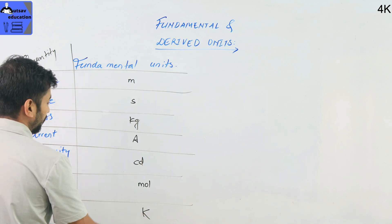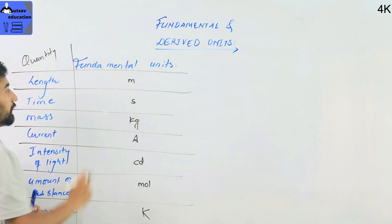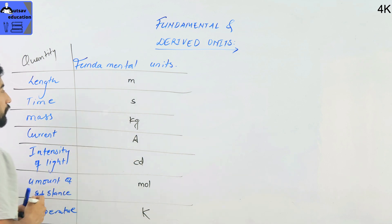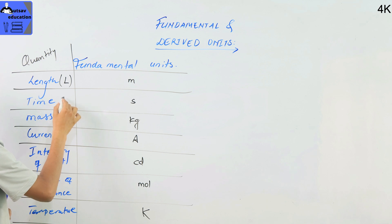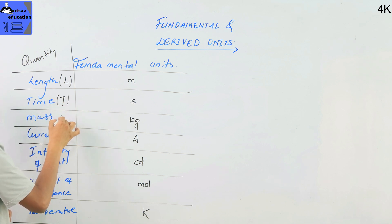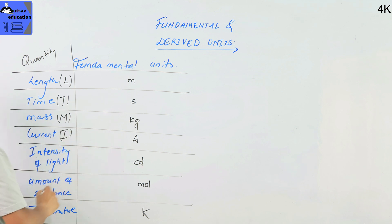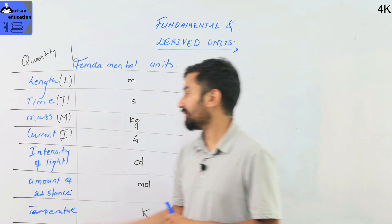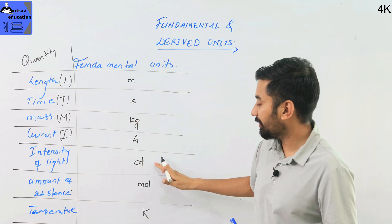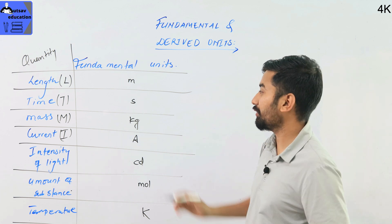Temperature is Kelvin. The fundamental unit symbols are: time is T, mass is M, current is I, intensity is I, amount of substance is mol, temperature is T. So units have a symbol and a pronunciation. For example: meter M, second S, kilogram kg.